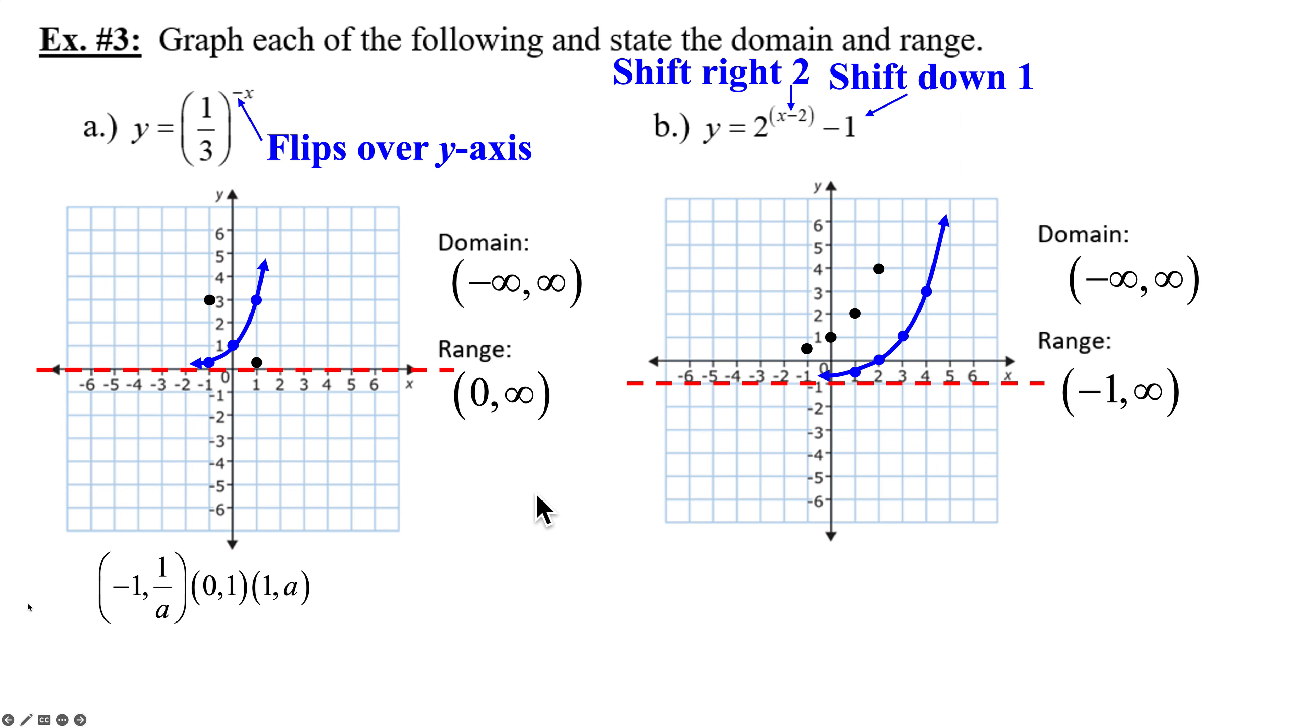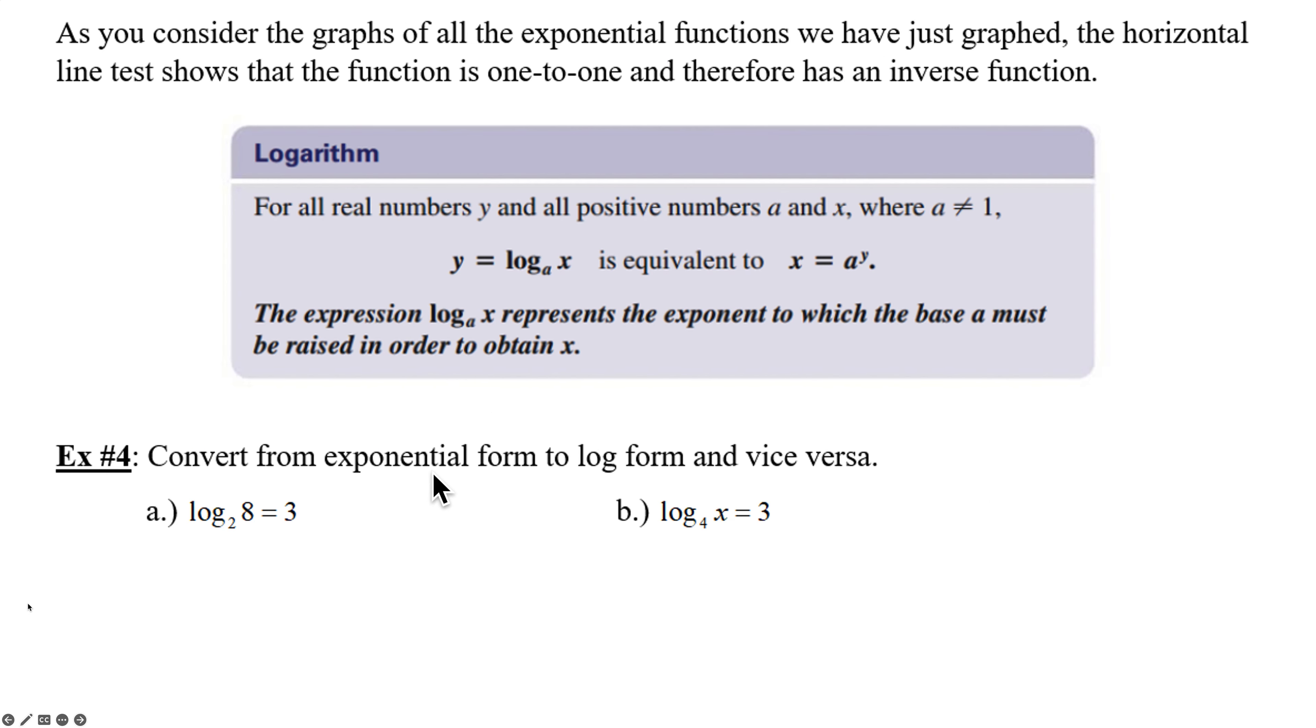Now with our exponential functions, because these are a one-to-one function, which means they pass the vertical line test and they pass the horizontal line test, they have an inverse function. That inverse function is x equals a^y, literally taking y equals a^x and switching the x and the y around. So the problem is, though, if we want to write this as a function, we need to have it solved for y. So we created a new name for a function. It's called a logarithm. And now the logarithm, this expression represents the exponent that you have to put on a to get to x. So y represents an exponent. So a^y equals x. That's what we have right here.